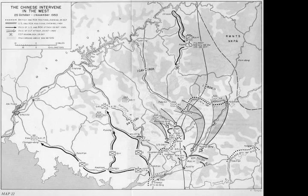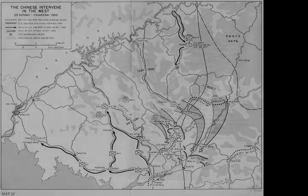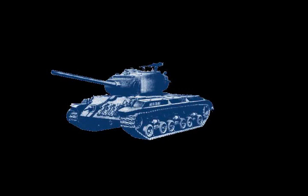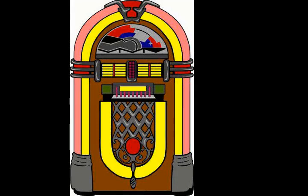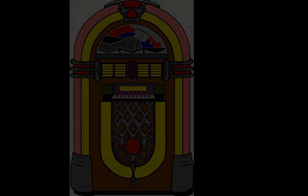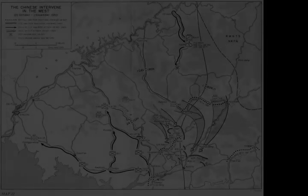By October 1950, the KPA was effectively destroyed by the UN forces after the landing at Incheon, the breakout from the Pusan Perimeter, and the UN September 1950 counter-offensive. Despite the strong objections from the People's Republic of China on North Korea's northern border, the US 8th Army crossed the 38th parallel and advanced towards the Sino-Korean border at the Yalu River.